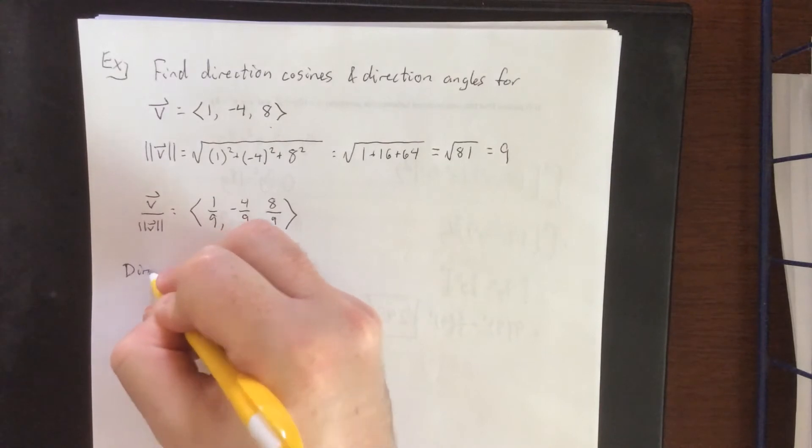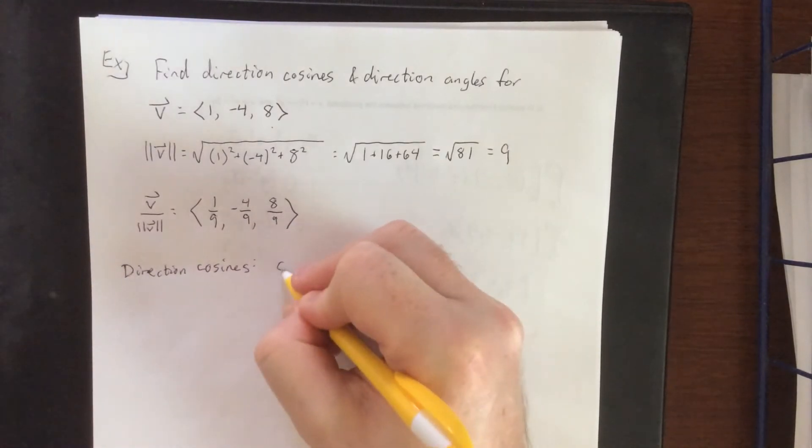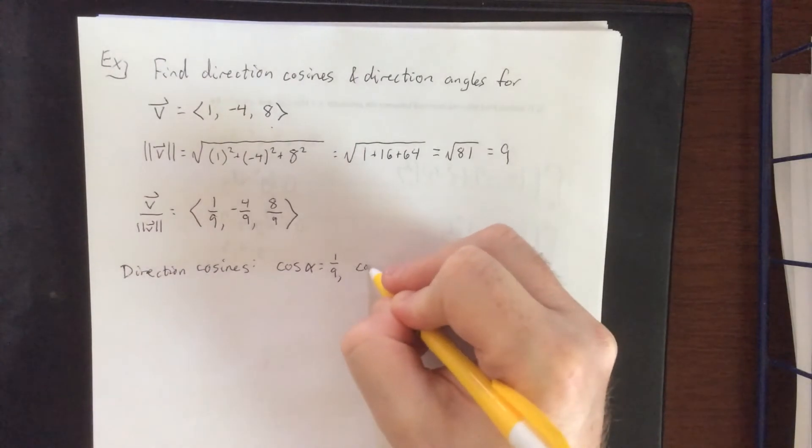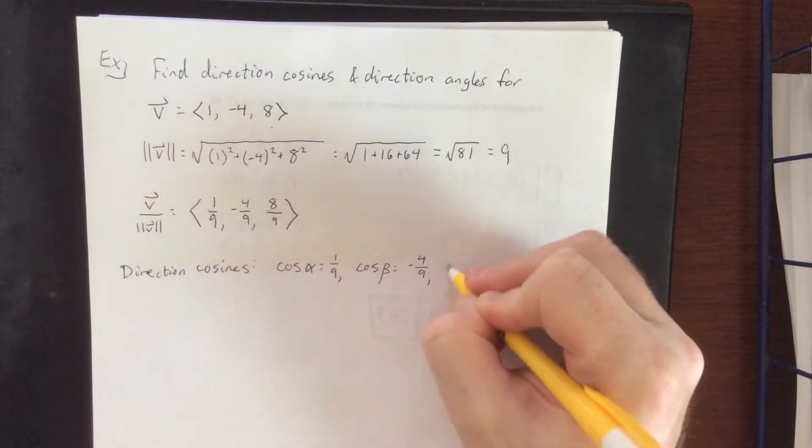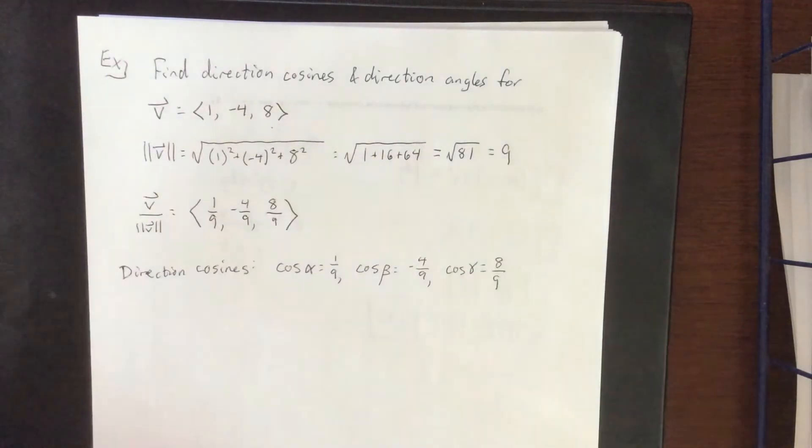For our direction cosines, we now have them. The cosine of alpha is equal to 1/9, the cosine of beta is equal to -4/9, and the cosine of gamma is equal to 8/9. Those are your direction cosines.